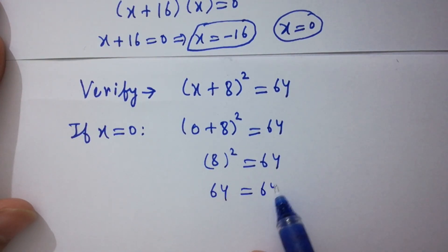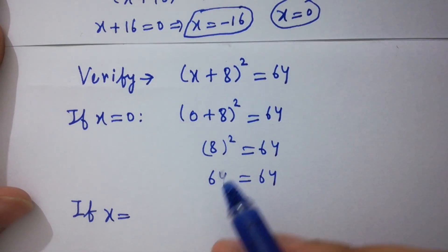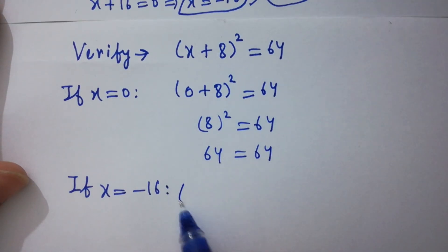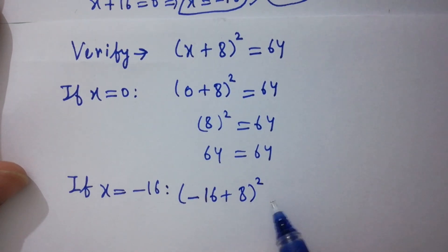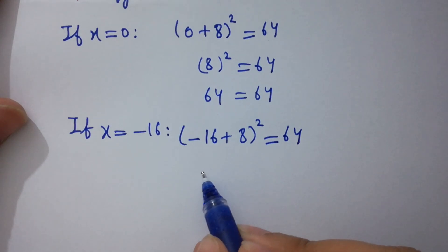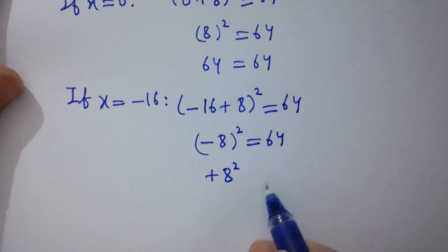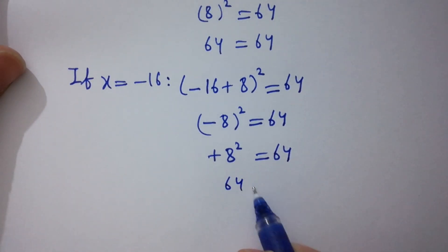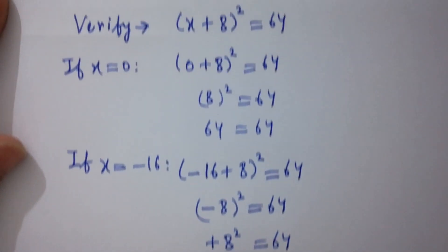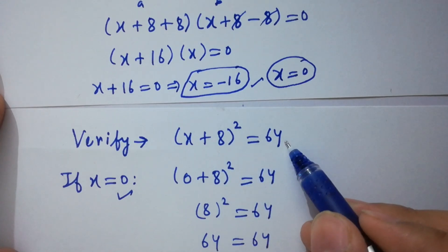If x = −16, then (−16 + 8)² = 64. Simplifying, −16 + 8 = −8, and since the exponent 2 is even, (−8)² = +64. So 64 = 64. Again left-hand side equals right-hand side, which shows that x = 0 and x = −16 both satisfy the equation (x + 8)² = 64.